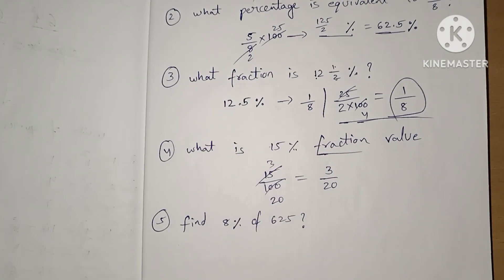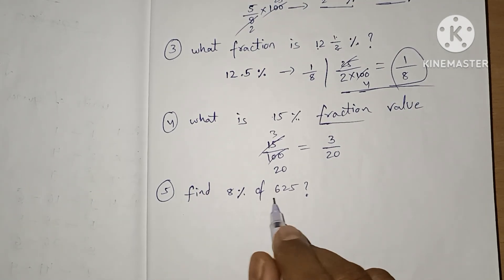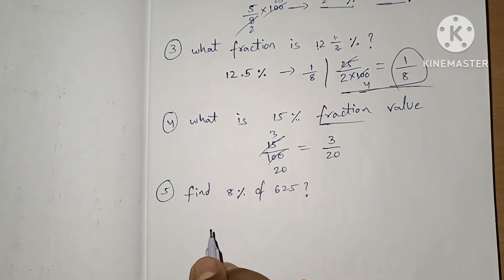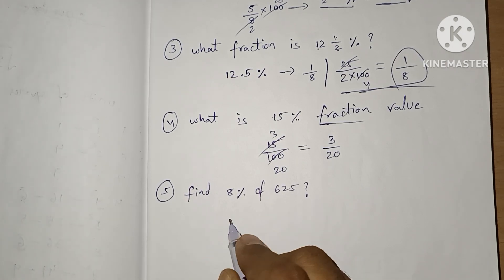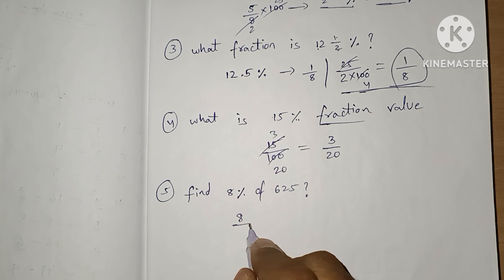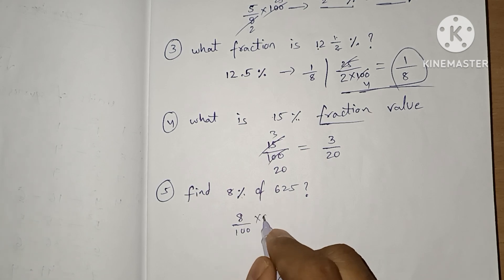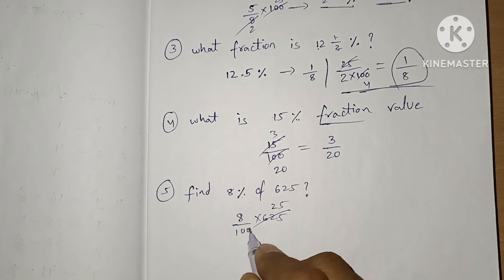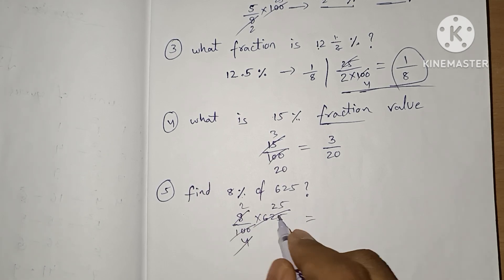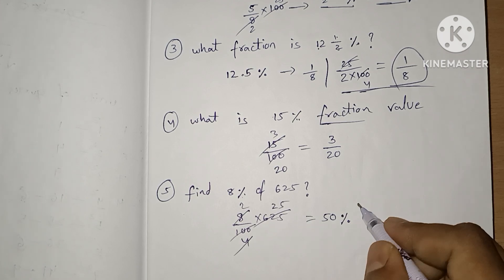Now we are going to see question number 5: Find 8% of 625. For this, we do 8 divided by 100 into 625. Simplifying: 25 goes 4 times into 100, and 25 goes 25 times into 625, giving 4 times 2, so we get 50. This is the basic traditional method.